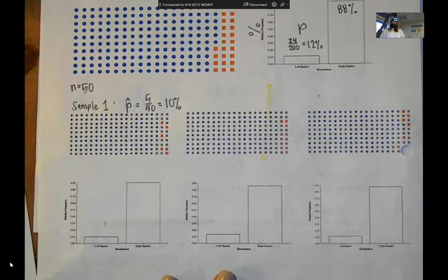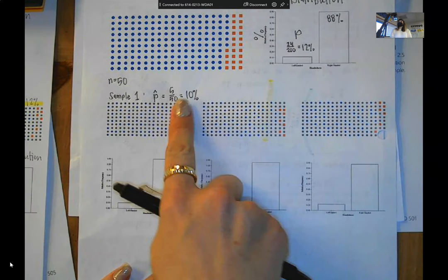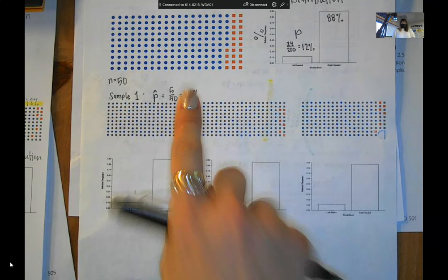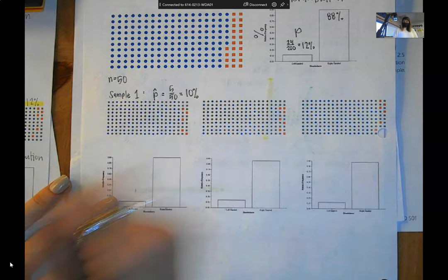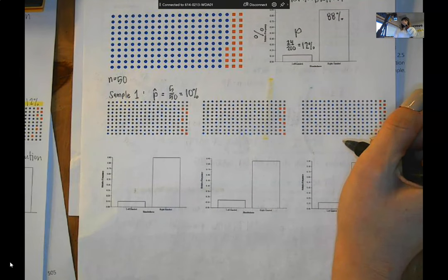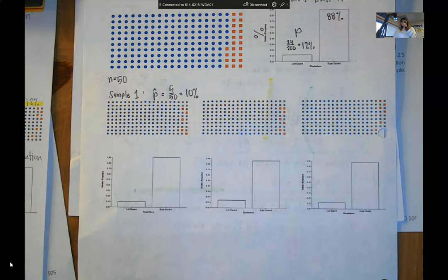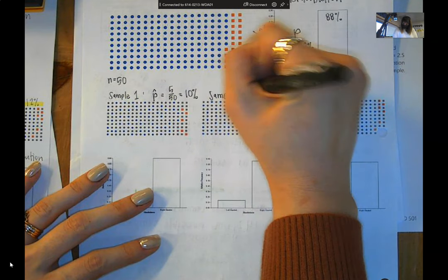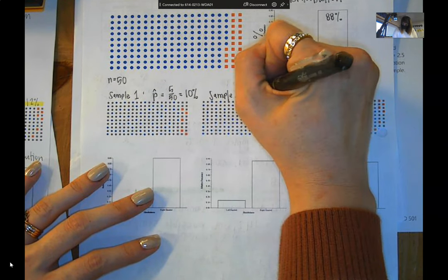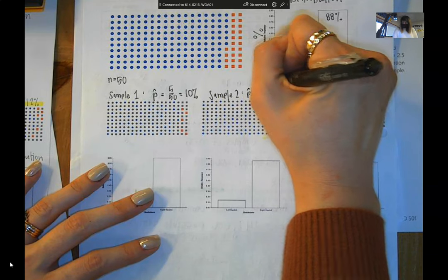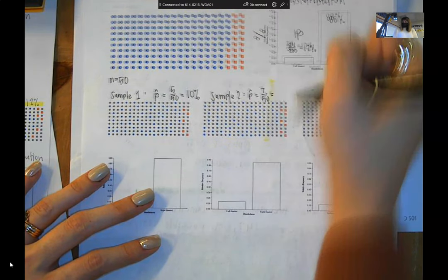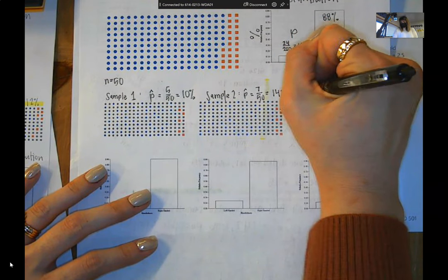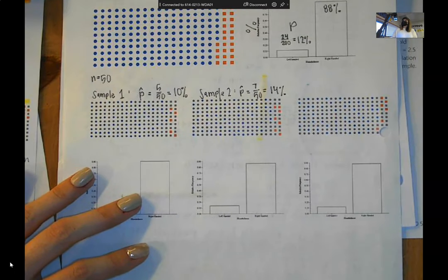We know that the true proportion is 12. In our first sample, we got 10. Is that unusual? No. In this case, we ended up underestimating our value. So sample two had seven out of 50. So in this sample, 14% of the students are left-handed.